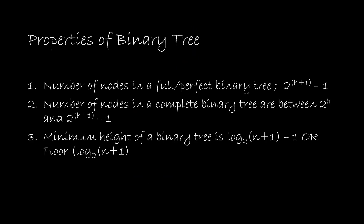Here are the properties we have studied so far. The number of nodes in a full or perfect binary tree is 2 raised to h+1 minus 1. The number of nodes in a complete binary tree can be between 2 raised to h and 2 raised to h+1 minus 1. The minimum height of a binary tree is log base 2 of (n+1) minus 1, or equivalently, floor of log base 2 of (n+1).